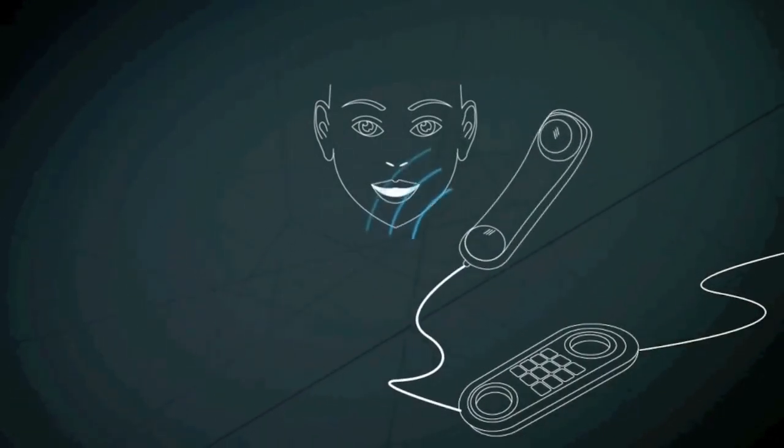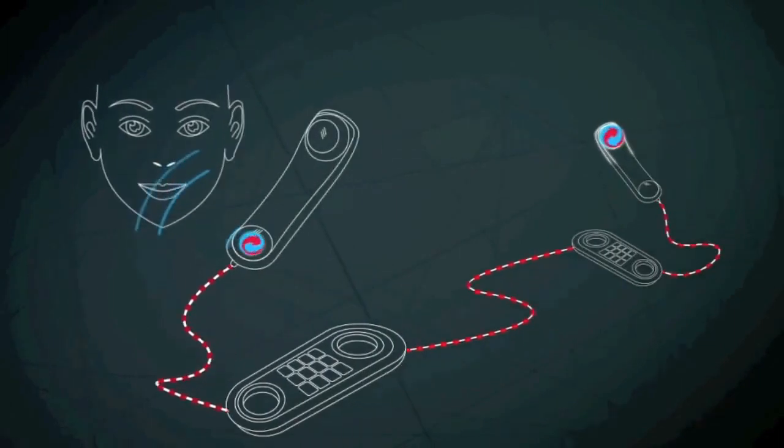When you pick up the phone, a switch connects you to the network. As you talk, sound waves hit a diaphragm in the microphone that converts them into electrical signals sent along the telephone wire. At the other end, these signals make a diaphragm in the loudspeaker move to create sound again.